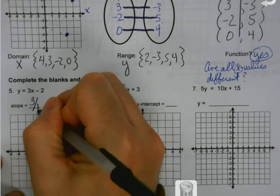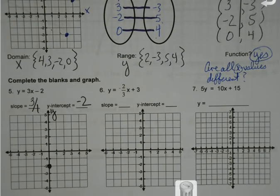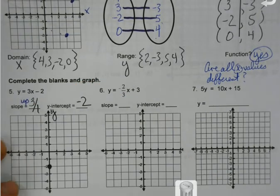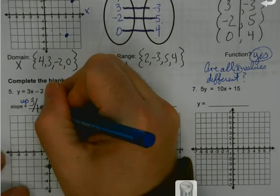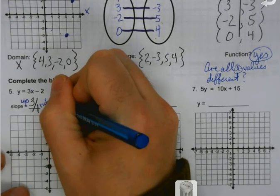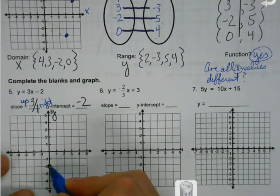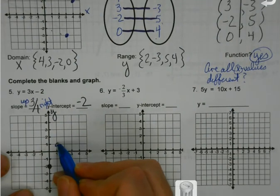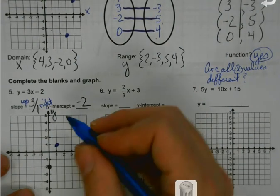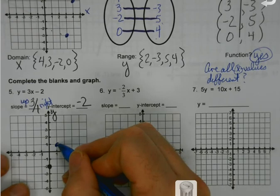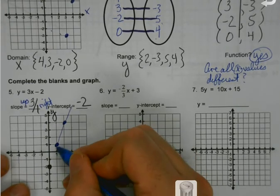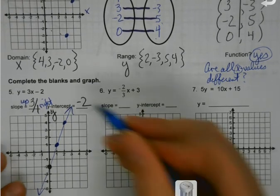Put 3 over 1 — but then I've got to know what that means. 3 over 1: when my number on top is positive, that's telling me I'm going up. So I'm going up 3. When my number on the bottom is positive, it means I'm going right. So from my y-intercept, I go up 3 and right 1. It's preferable to get 3 points if I have room. Then draw my line.